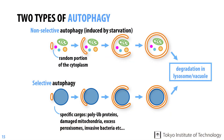These observations allow us to define two types of autophagy: non-selective autophagy and selective autophagy. In non-selective autophagy, cytoplasmic components are randomly sequestered by the autophagosome and degraded in lysosomes or vacuoles. In selective autophagy, specific targets are engulfed by the autophagosome in a target-specific manner for their removal from the cytoplasm.